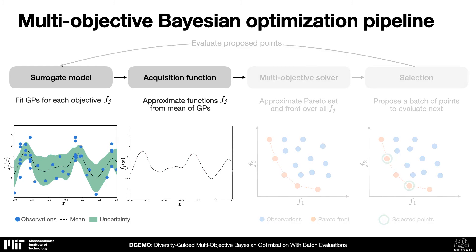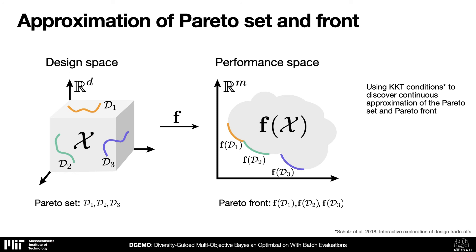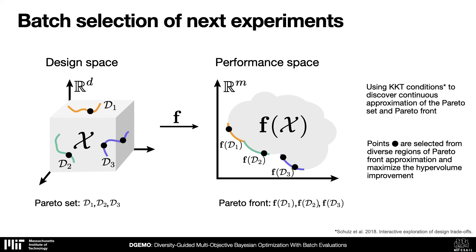The first two steps are commonly used in other methods. Our main contribution lies in the last two steps of the pipeline. While other methods typically obtain a discrete and sparse approximation of the Pareto front, we use the so-called KKT conditions to quickly discover large and continuous regions of Pareto optimal solutions. A key insight for our selection strategy is that these solutions are often grouped in disconnected regions spread across the space, so we define a diversity metric to encourage sampling from various regions while also trying to maximize the hypervolume improvement.